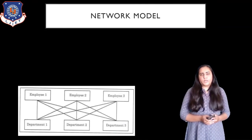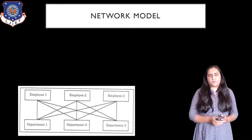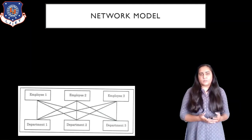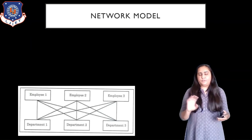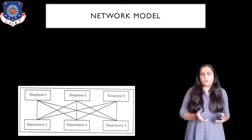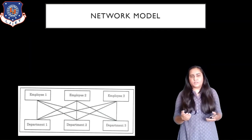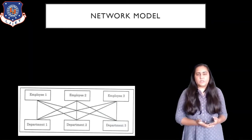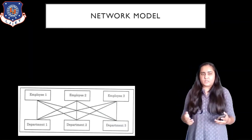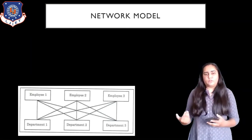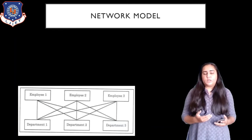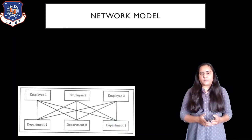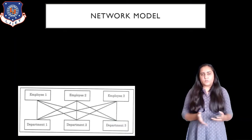The network model looks something like this. This is the diagram and it's fairly simple to create because all you need to do is put different objects together, and whenever one object is related to another you just show it with a line. You can see in the diagram that employee 1 is related with departments 1, 2, and 3, so there are lines going from employee 1 to departments 1, 2, and 3.